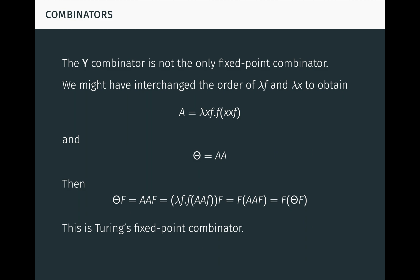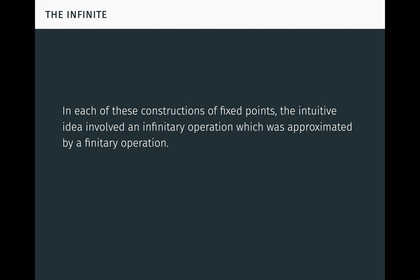In each of these constructions of fixed-points, the intuitive idea involved an illustrative but illegitimate infinitary operation, which was approximated or simulated by a legitimate finitary one, whether that was taking a limit of a sequence of function applications, or performing a recursive self-substitution in an arithmetic formula, or performing a recursive self-application of a lambda term. This is reminiscent of Aristotle's use of the potential infinite as opposed to the actual infinite. Although the actually infinite operations may be problematic, the merely potentially infinite ones are fine, and yield the desired results. This pattern is visible in the proofs of many other fixed-point theorems in mathematics.